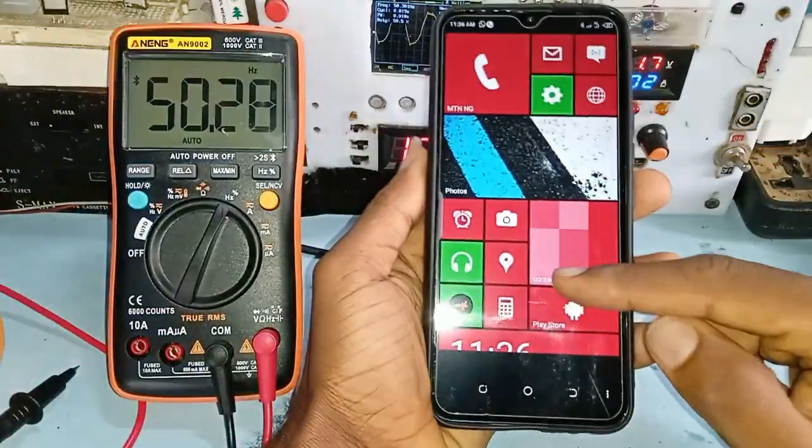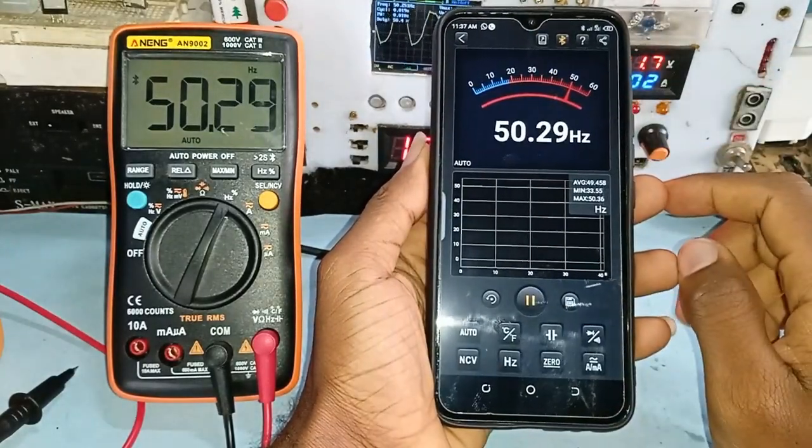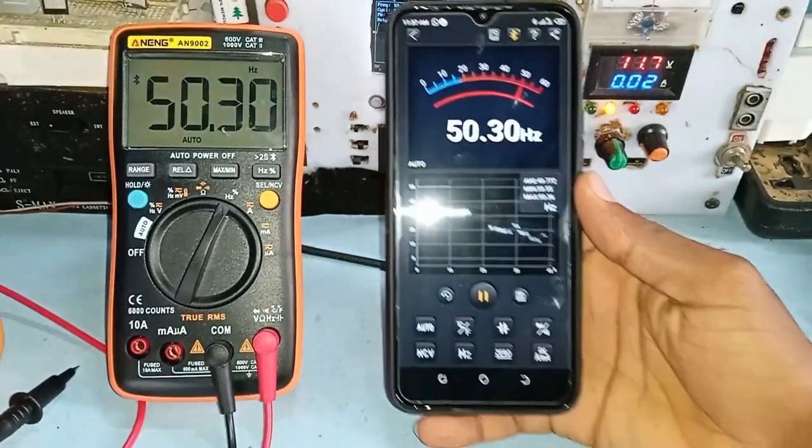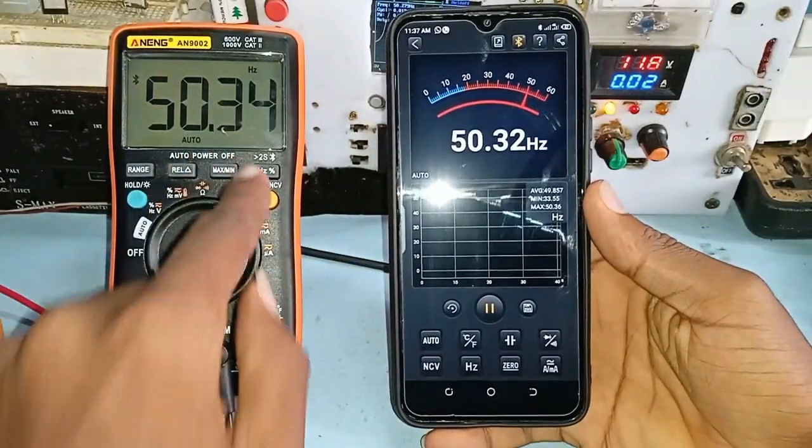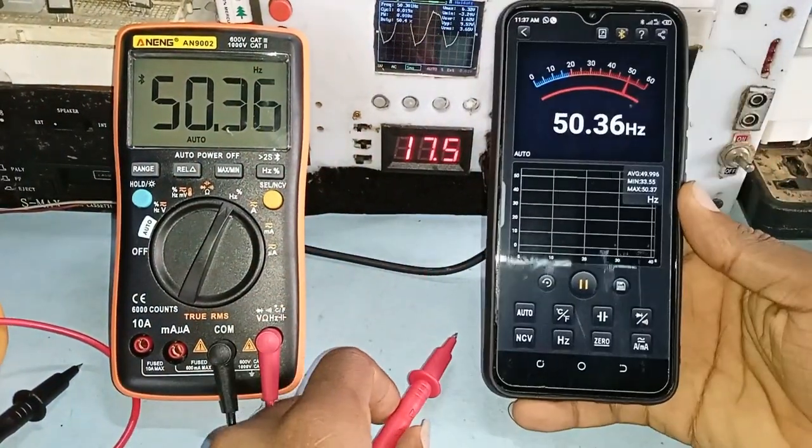The first test is to check the frequency measurement. I love the device due to the fact that you don't need to connect the probe directly to the supply as the system measures the frequency close to it and I'm running on a grid supply of 50Hz frequency.